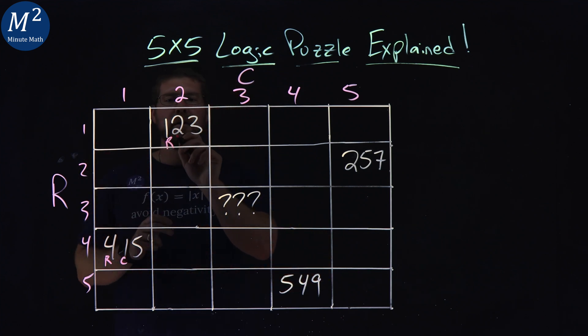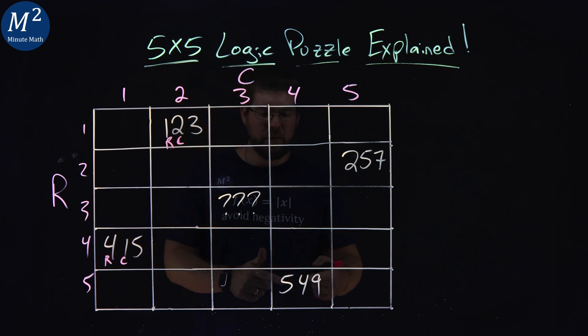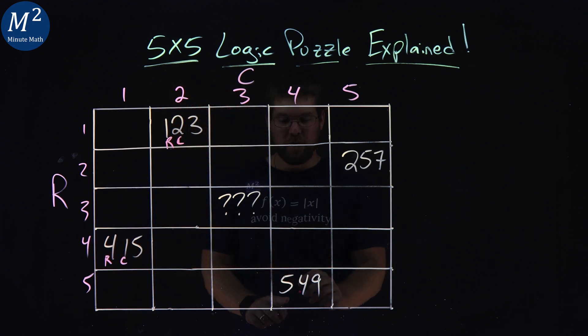Row is 1, column 2. Skip that one, let's go down here. Row is 5, column 4.